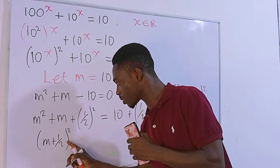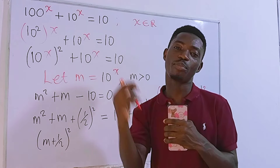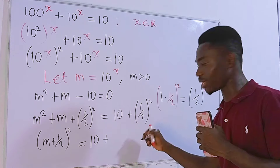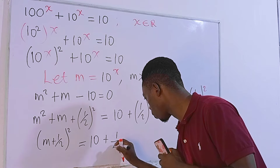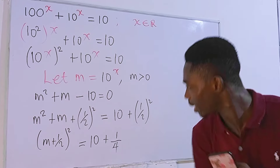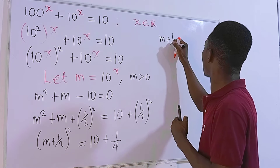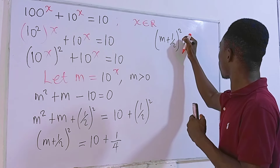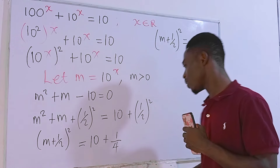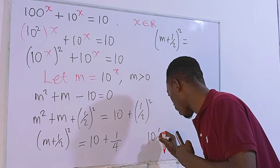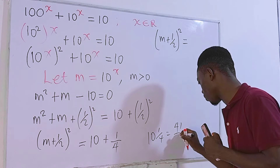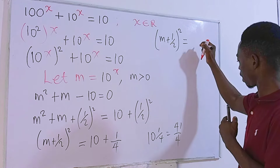On the right-hand side we have 10 plus 1/4. Simplifying: (1/2)² equals 1/4. We combine the integer and fraction — 10 and 1/4 — converting to an improper fraction: 4 times 10 is 40, plus 1 gives 41 over 4. So (m + 1/2)² = 41/4.